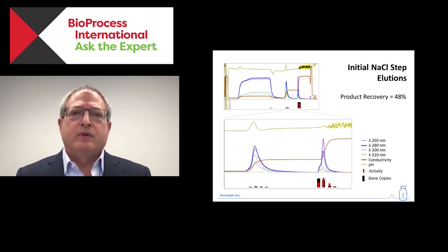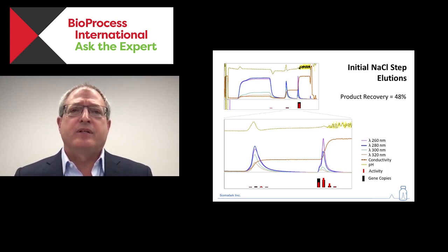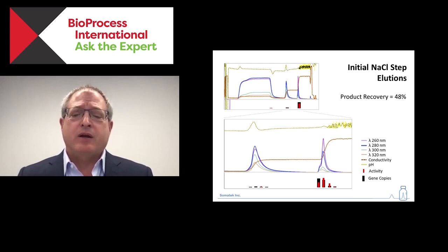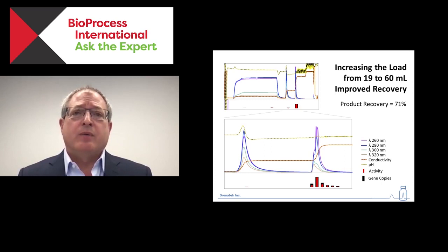Our recovery went up from around 20% to 48% with step gradients, mostly because step gradients are more friendly to assays — products are more concentrated. At this point we start looking at activity every time we look at quantity. We were having a hard time with chromatin contamination in our product, so we introduced an endonuclease — a Benzonase-type endonuclease — to digest the chromatin before going into the study. We saw that it did no harm to our recovery, which was now up to 71%.